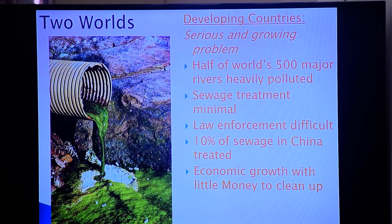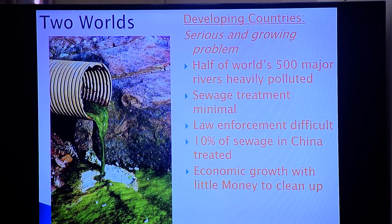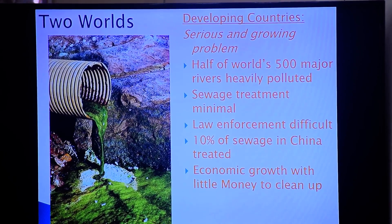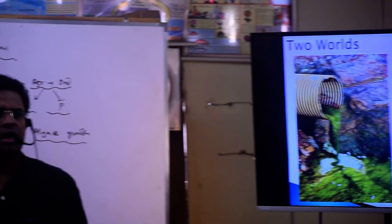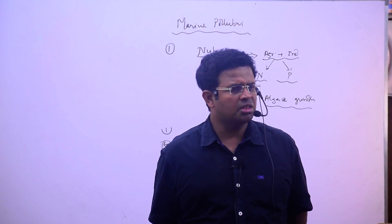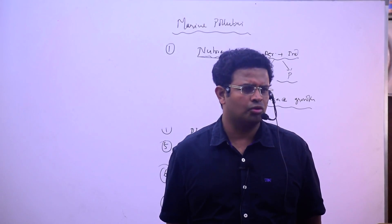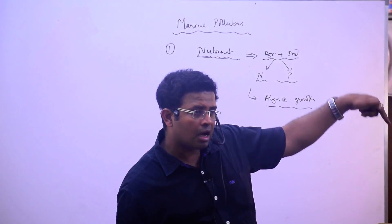It is known as amensalism. There is mutualism, parasitism, commensalism and amensalism. In mutualism, both are benefiting, both species are interacting. In parasitism, one is benefiting and other is harmed. In commensalism, one is unharmed. But in amensalism, you don't even know that because of you, others are getting affected. They are just growing.